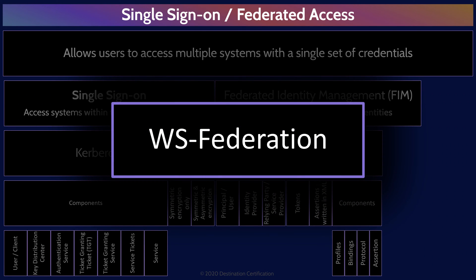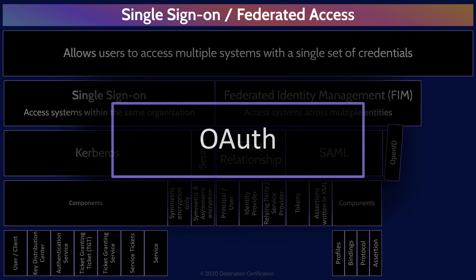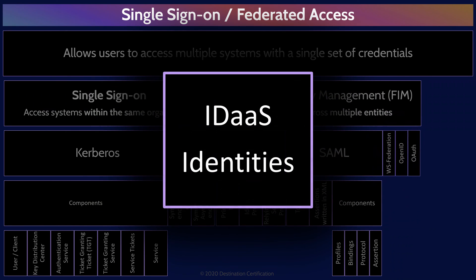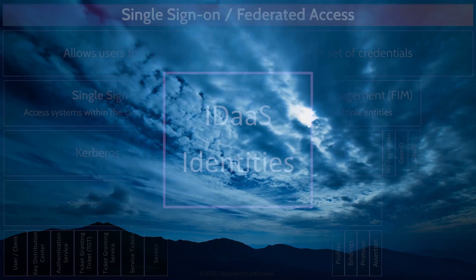There are a number of different federated access protocols, and there are three others you should be somewhat familiar with. The first is WS Federation, which provides both authentication and authorization. OpenID provides authentication, and OAuth provides authorization capabilities. The final piece in this mind map, somewhat related to single sign-on, is Identity as a Service — essentially a cloud-based service used for cloud-based access management.